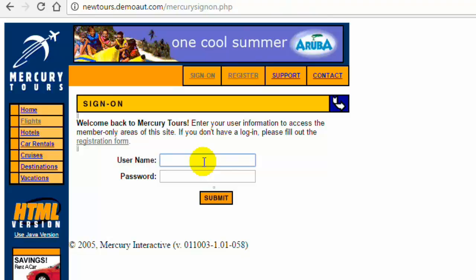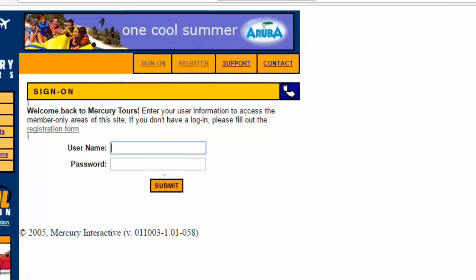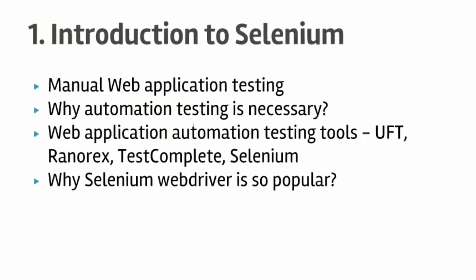Instead of manually testing the web application, you are going to use an automation testing tool. There are different types of automation testing tools such as UFT, Ranorex, TestComplete, and Selenium — these are some of the automation testing tools that can be used to automate web applications.